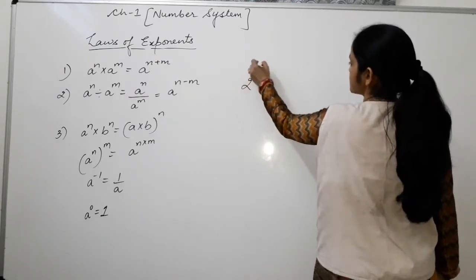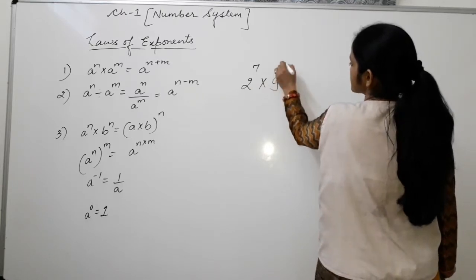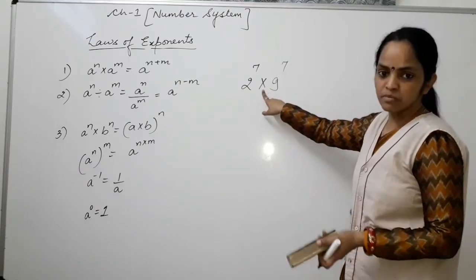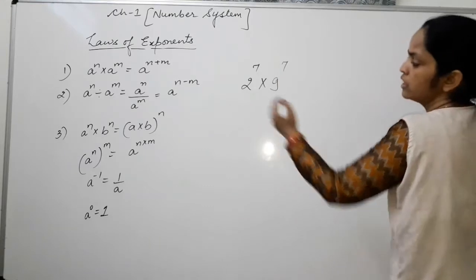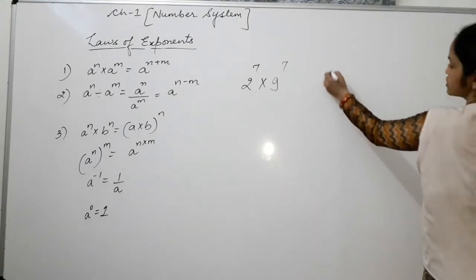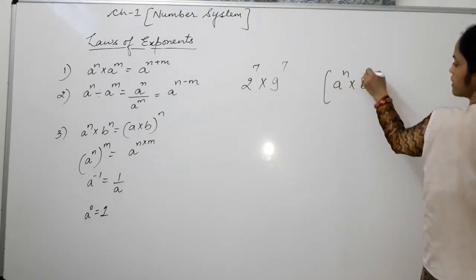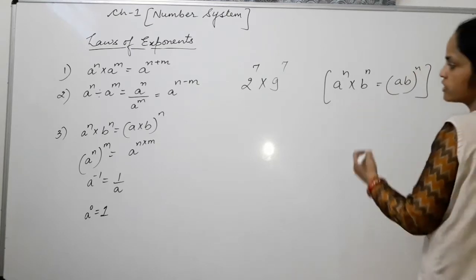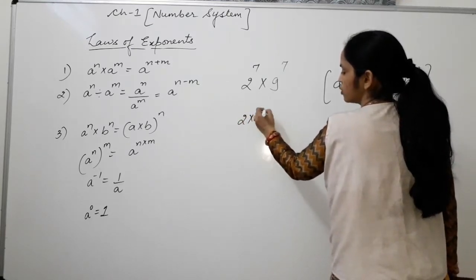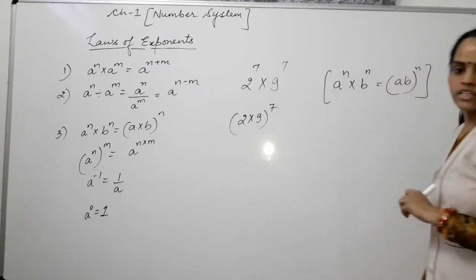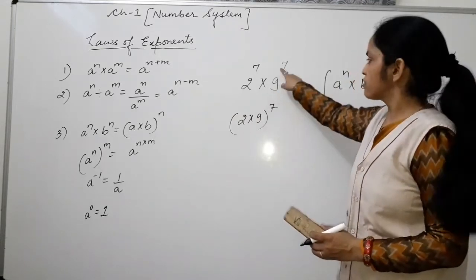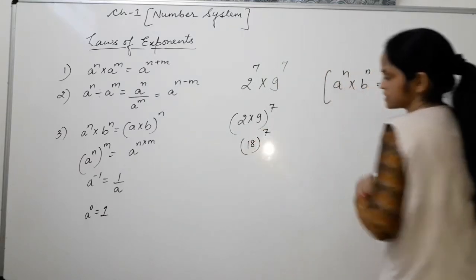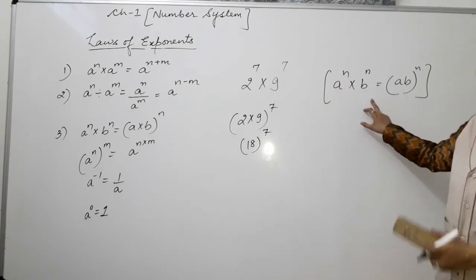If it is given: 2 to the power 7 multiplied by 9 to the power 7. The base numbers are not same, but both are in multiplication and the powers are same. We apply the third law: a to the power n multiplied by b to the power n equals (a × b) whole raised to the power n. So we get (2 × 9) to the power 7, which is 18 to the power 7. That is our answer.